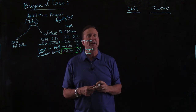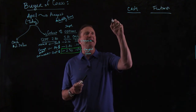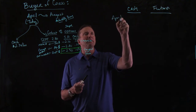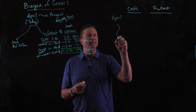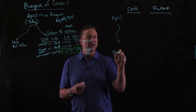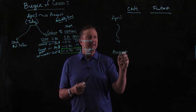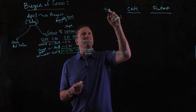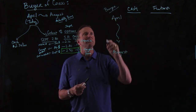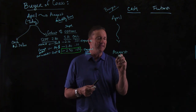So nothing's different there. You always have a date — today is April. And we are looking at the risk all the way to August. You need to know that you are a buyer in this example, and we're a buyer of corn.